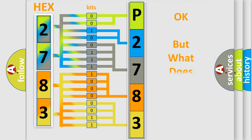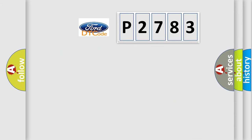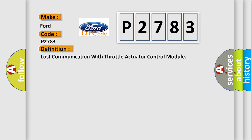We now know how the diagnostic tool translates the received information into a more comprehensible format. The number itself does not make sense if we cannot assign meaning to what it actually expresses. So, what does the diagnostic trouble code P2783 interpret specifically for Infiniti car manufacturers?